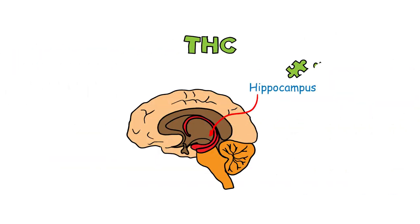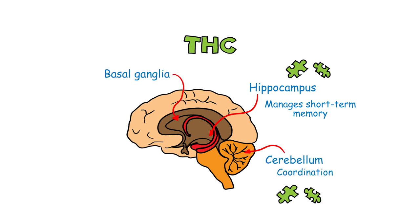One such part of the brain, the hippocampus, manages short-term memory, meaning that marijuana use can impede recollection of recent events. Additional regions of the brain that are impacted include the cerebellum and basal ganglia, which help to control coordination and involuntary muscle movements respectively.